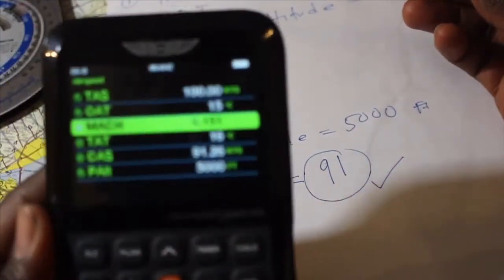If you have 91 and verify your answer using the CX-3, how will you go about finding your indicated airspeed? Because that's the airspeed you are going to fly on board the aircraft. You have your calibrated using the true airspeed, outside air temperature, and cruising altitude, which gives you your calibrated airspeed.